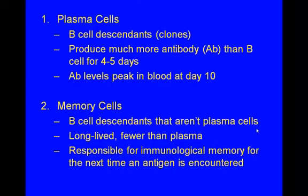Once B cells get programmed, they start making antibodies slowly, but they also make plasma cells, which produce antibodies much more efficiently and much faster. At the same time, B cells also make memory cells. These are long-lived and fewer in number than plasma cells, and they're responsible for immunological memory for the next time that same antigen is encountered.